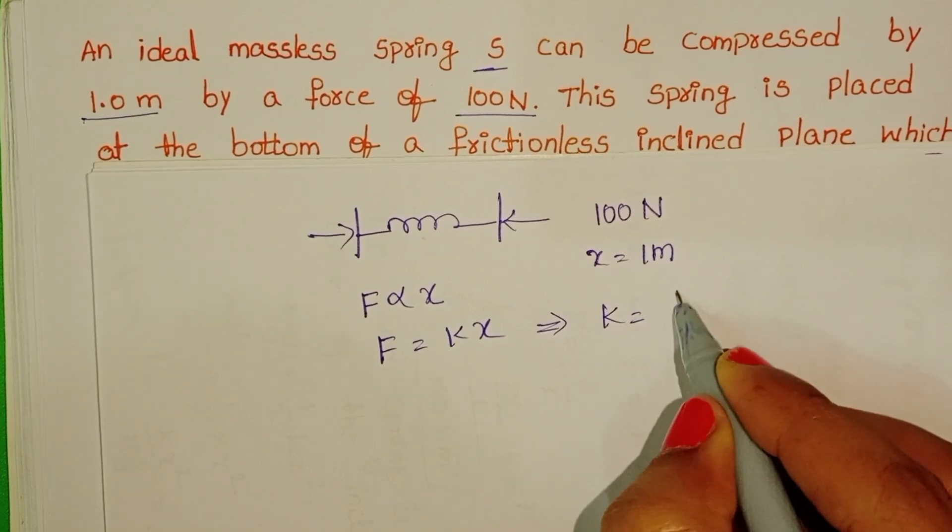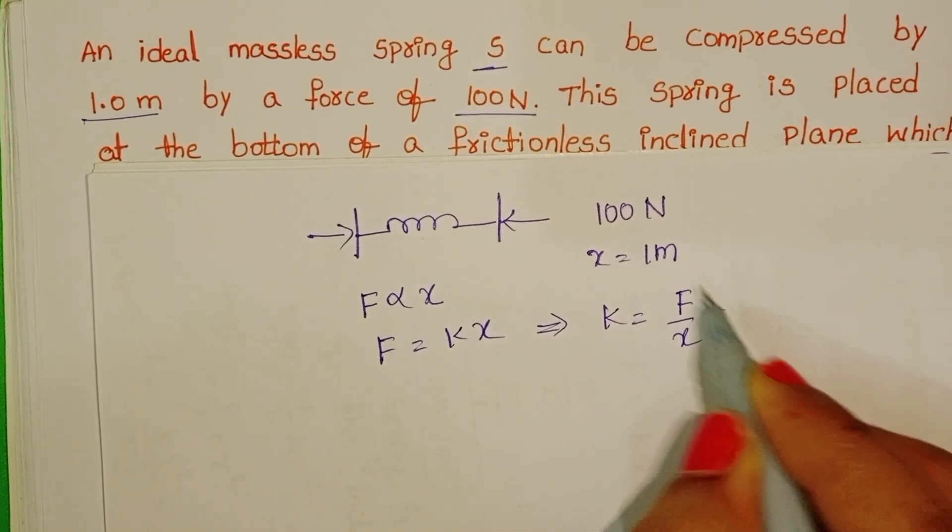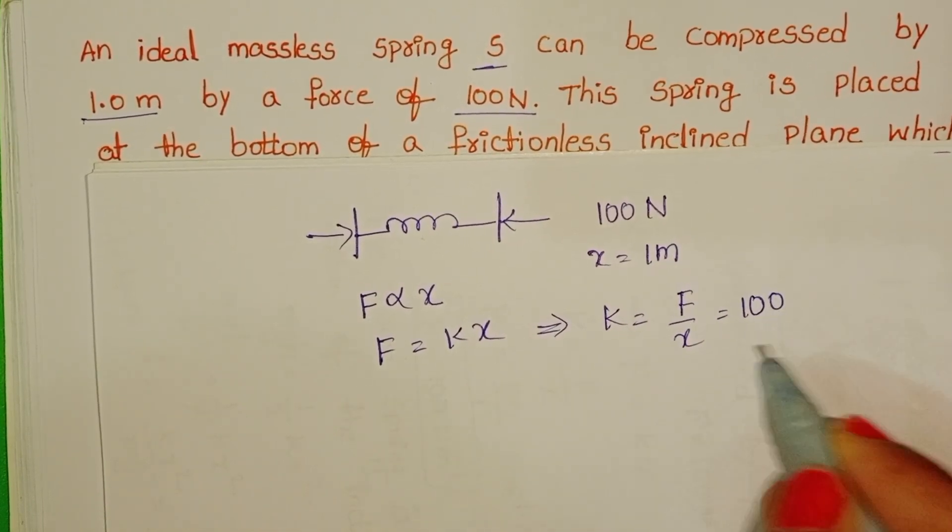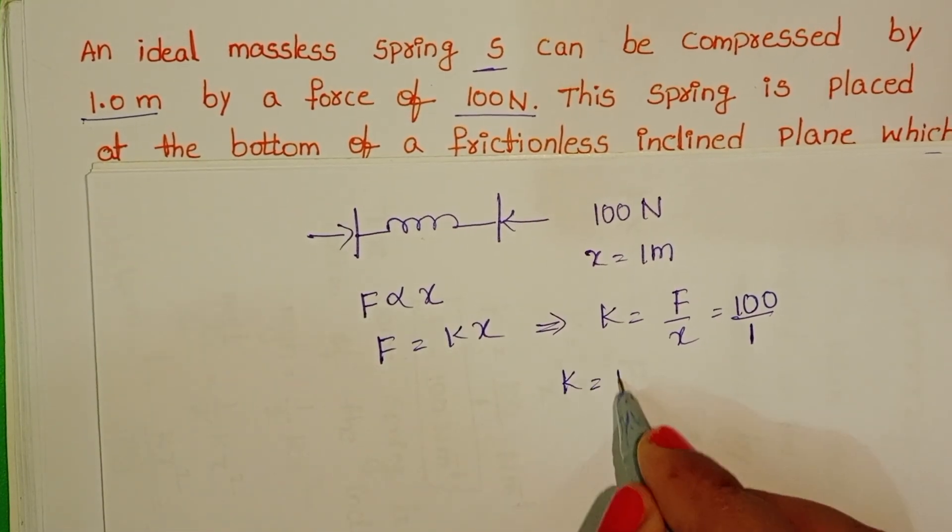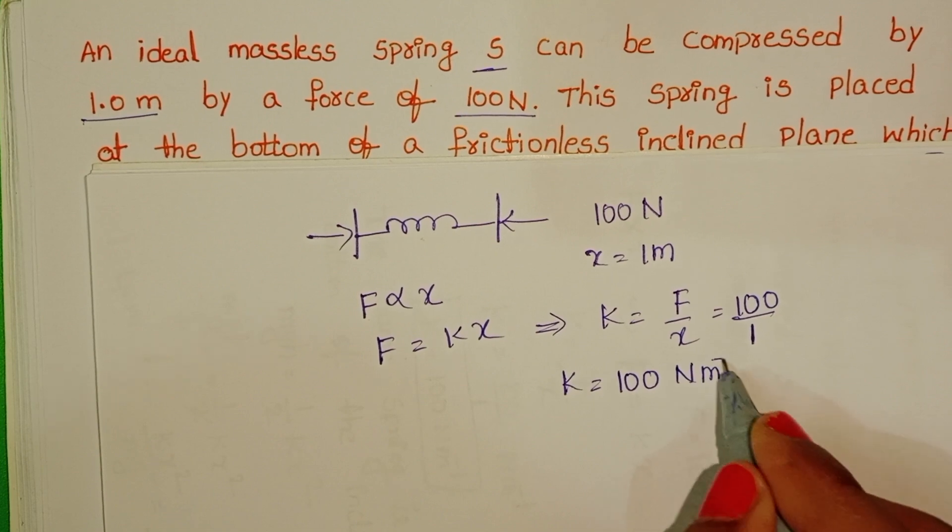From this, k equals F by x. Here force is 100 Newton and compression is 1 meter. k equals 100 Newton per meter.